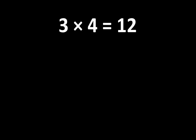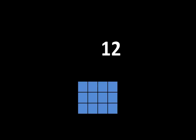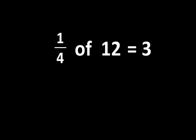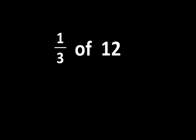3 times 4 is equal to 12, and there are many important ideas related to the number 12. As we think about the number 12, we know that if we divided it into 4 equal parts, each part would be one-fourth of 12. And one-fourth of 12 is equal to 3. And at the same time, if we divided 12 into 3 equal parts, each part would be one-third of 12, and one-third of 12 is equal to 4.